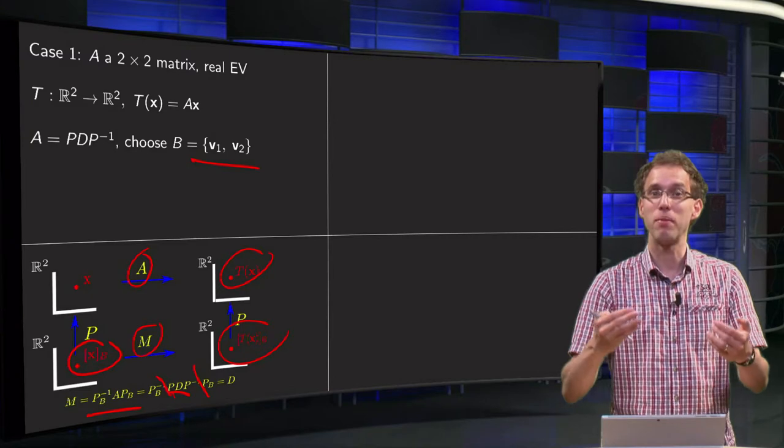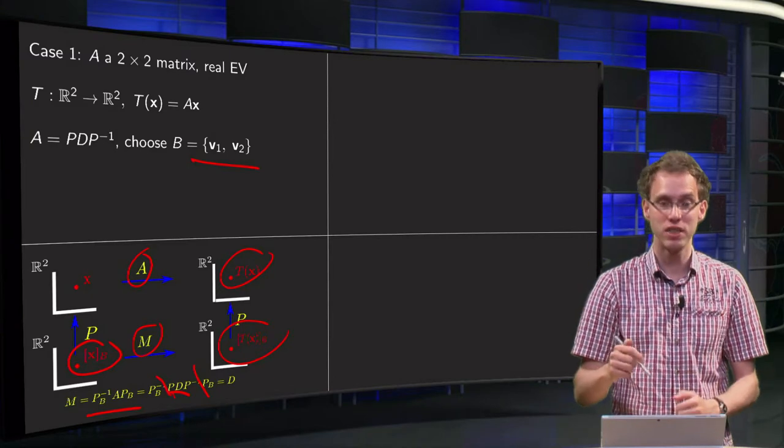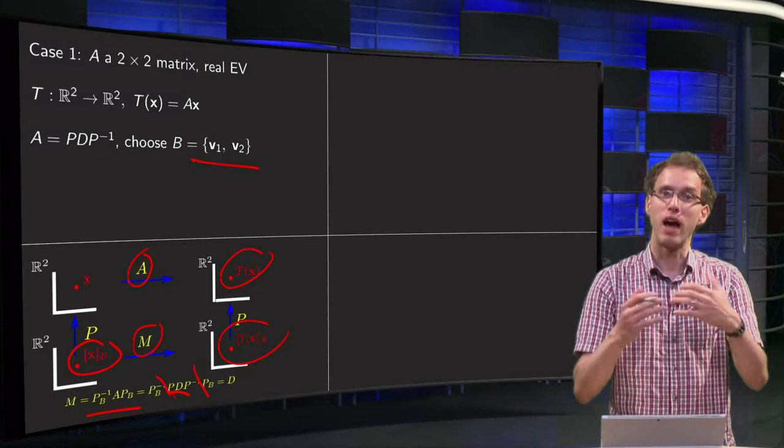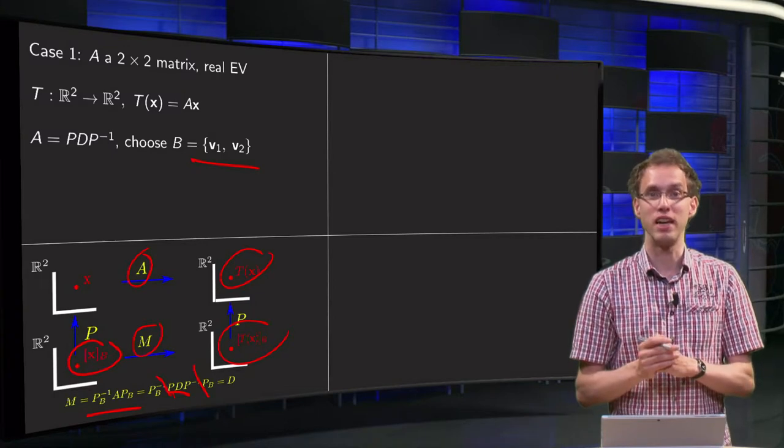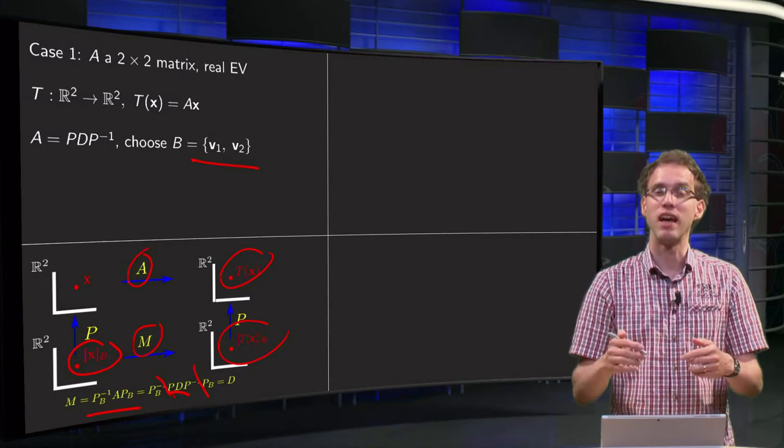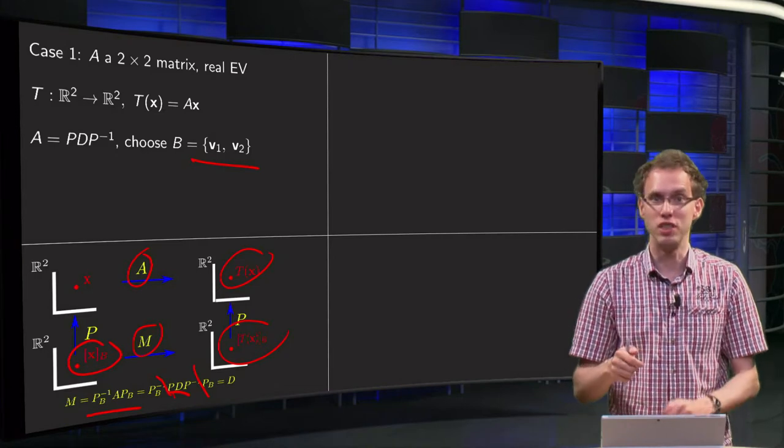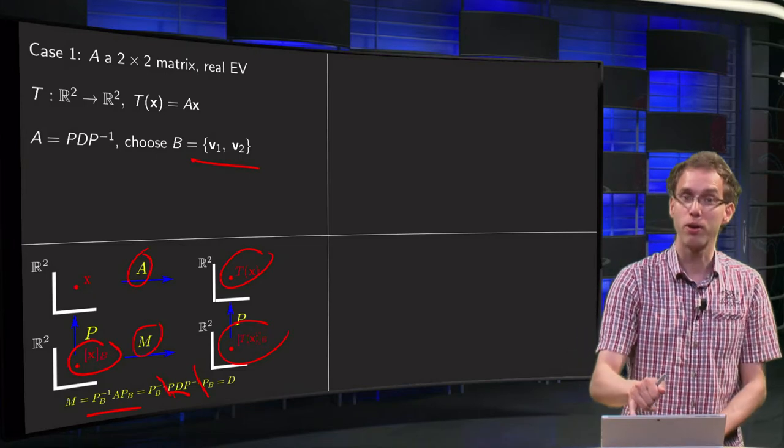If we view this mapping with respect to another basis, our mapping becomes a nice diagonal mapping. So when your 2×2 matrix A is similar to a diagonal matrix, then viewed in the appropriate basis, our mapping is just a diagonal mapping, which is much easier than another mapping.